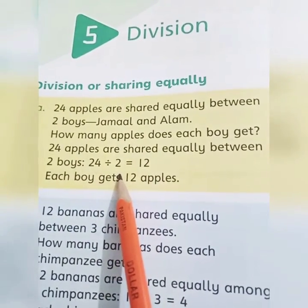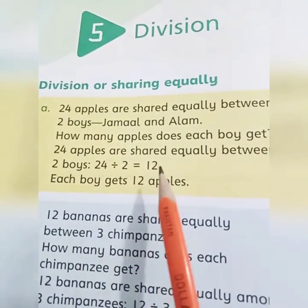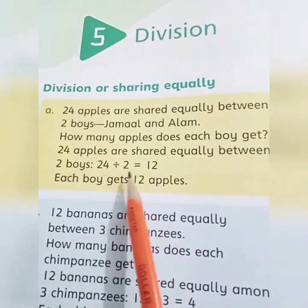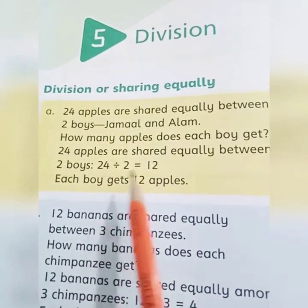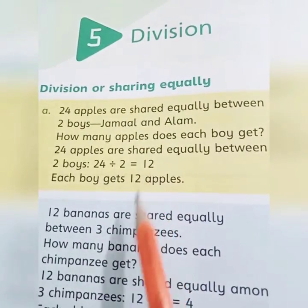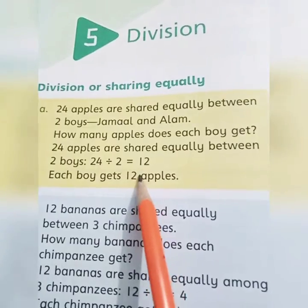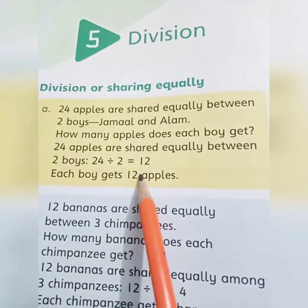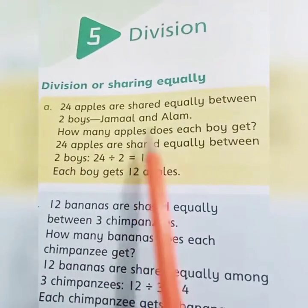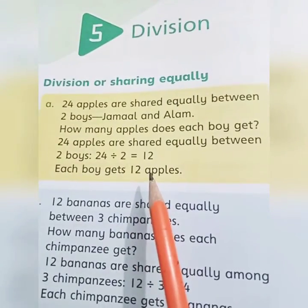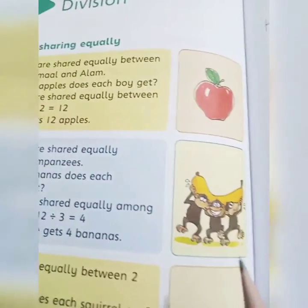We read the table of 2, and when we reached 2 × 12, we got 24. So from the table of 2, we read until we found 24 — and we found it at 12. 2 twelves are 24, so the answer is 12. Each boy gets 12 apples. 24 apples are equally divided between two boys.